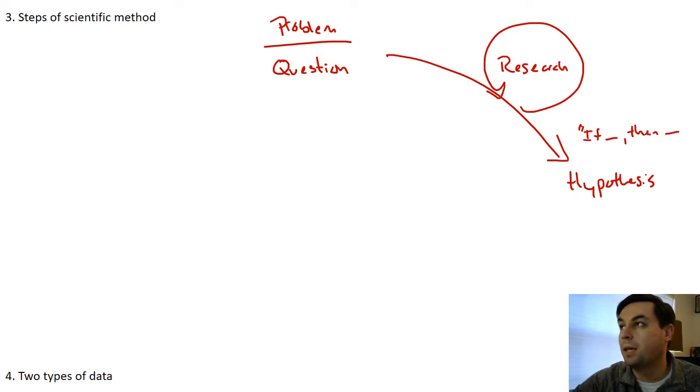A hypothesis, try to keep in mind, is written as an if-then statement. If blank, then blank. And this does a good job in reinforcing the independent variable and the dependent variable, and that's what would be in those blanks respectively. Also, this is not just an educated guess - that's one of the terms that kids have been learning for years and years - but in class we learned that it's a prediction that you can actually test, and it's got to be written in a way that you can falsify, in a way that you can look at and say that's right or that's wrong. That's really important in science.